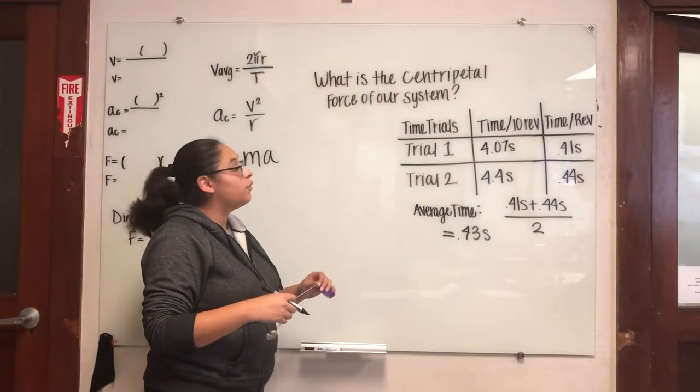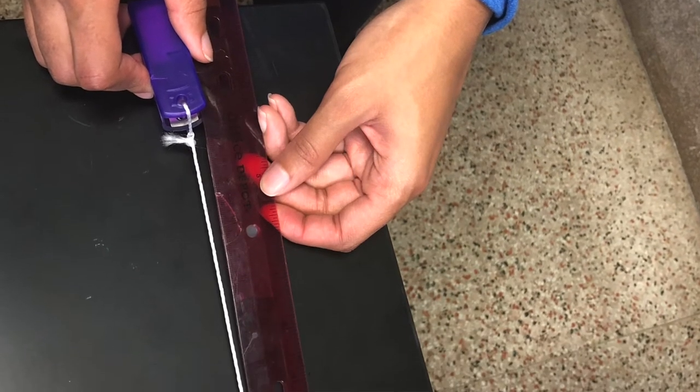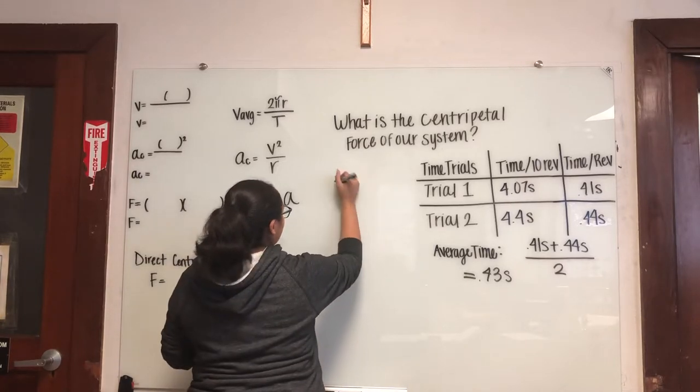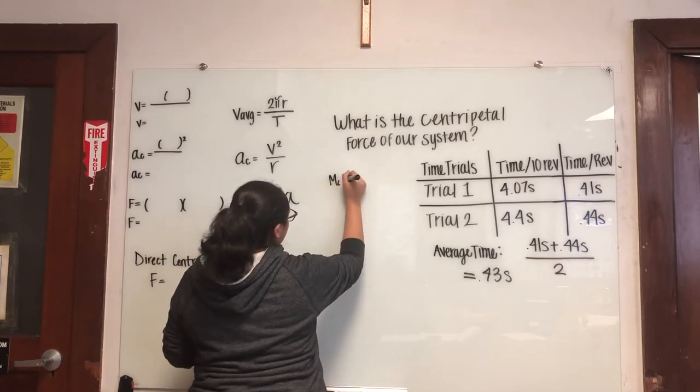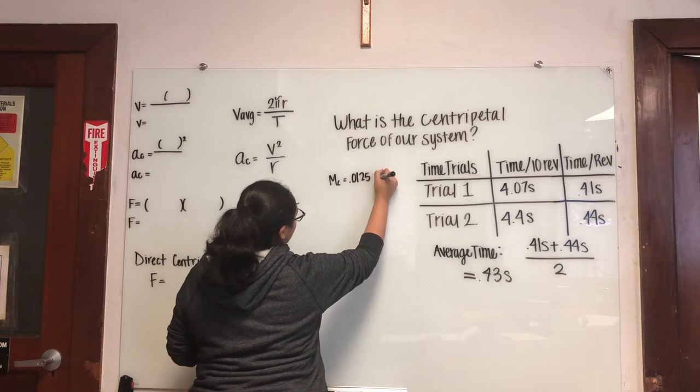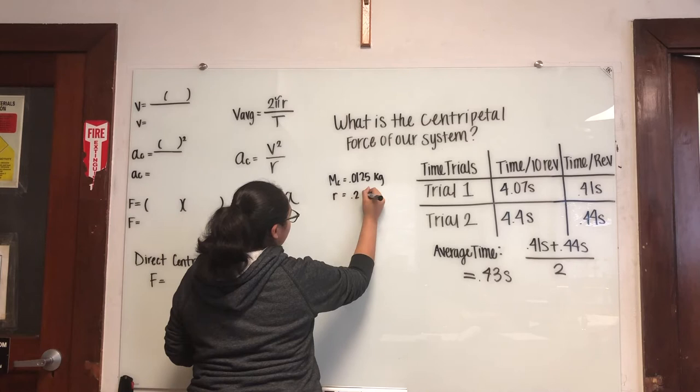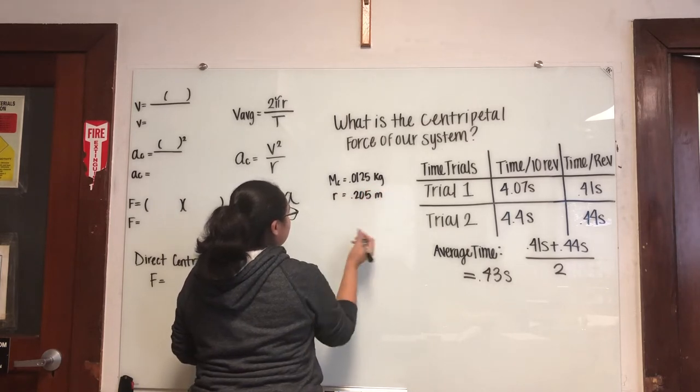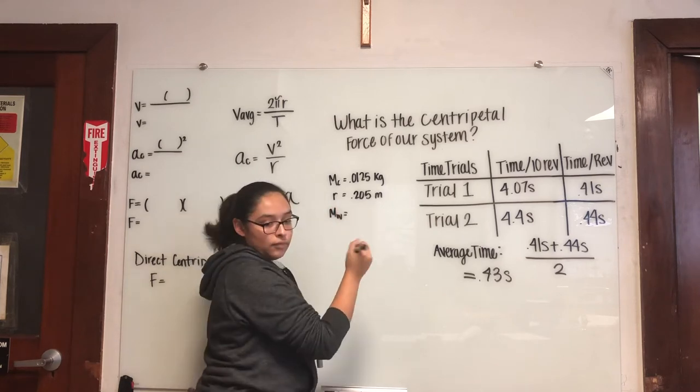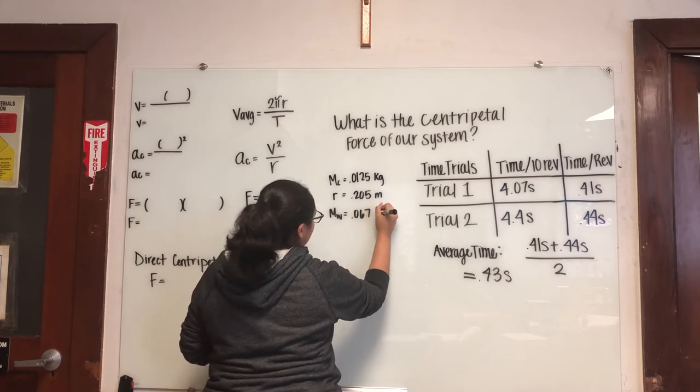Before we found our centripetal force, we found our radius of the string here and we found the mass of the clip and the mass of the weight. So the mass of the clip was 0.125 kilograms, our radius was 0.205 meters, and our mass of our weight was 0.067 kilograms.